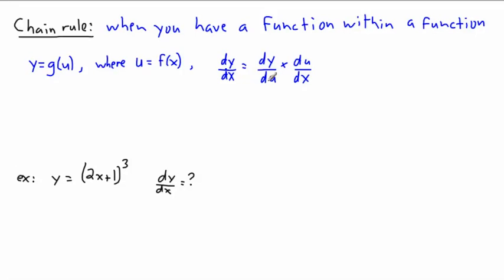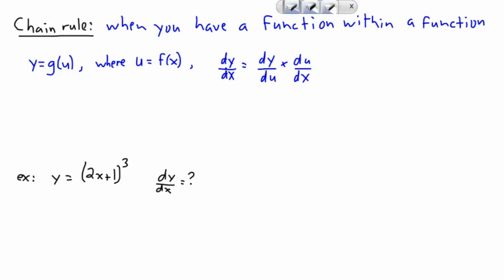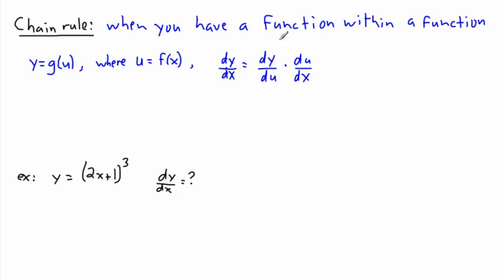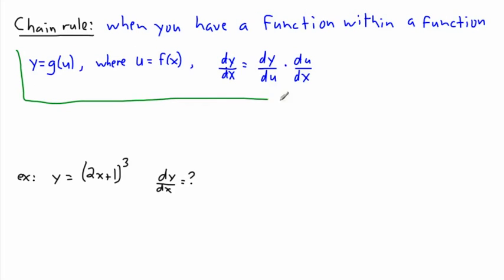You might think the du's cancel out so we get dy/dx, but in calculus that's not a meaningful operation. This multiplication here — dy/du times du/dx — is the form that a lot of people use for chain rule.